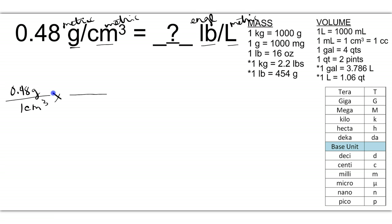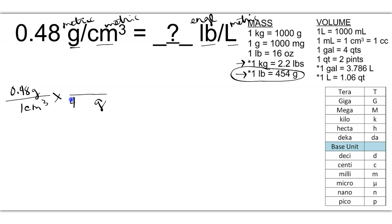Remember, you have your choice of which unit to convert first, but I'm just going to start with the top. We're going to bring down grams, and now I need to change from metric grams to English pounds. So I'm going to use one of my conversion factors with an asterisk: one pound is equal to 454 grams. So 454 grams equals one pound. Grams will cancel, and now I have pounds left over, which is what I want.